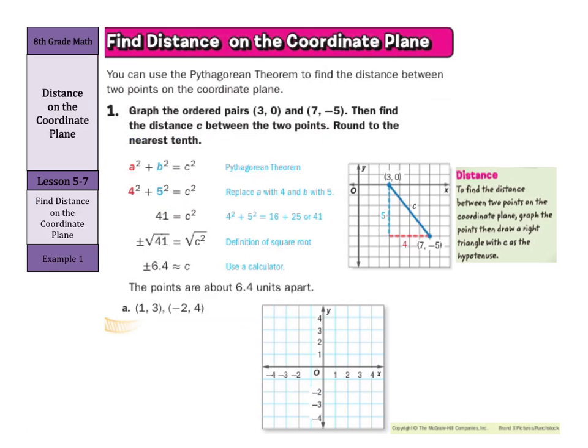Now one way to find distance on the coordinate plane is to use the Pythagorean theorem. And our first guided example here does just that. Where it graphs the ordered pairs (3, 0), which is right there, and (7, -5), and it wants to find this distance c. Well, the way we can do this is to draw a vertical line and a horizontal line so that we have a right angle, and we have a right triangle, so we can use the Pythagorean theorem to solve. And you can see where they did that.